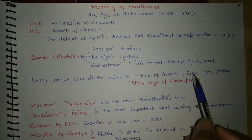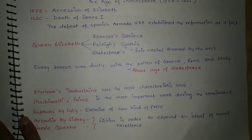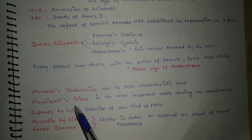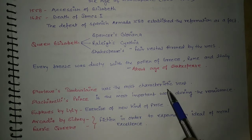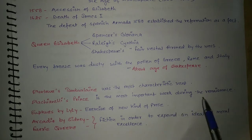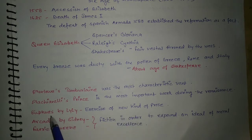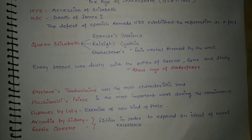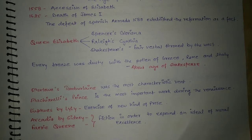The important things that happened in this period: Marlowe's Tamburlaine was the most characteristic event. Machiavelli's Prince is the most important work during the Renaissance. Euphues by Lyly exercised a new kind of prose, and the term 'euphuism' came into existence because of this work. Arcadia by Sydney and Fairy Queen used fiction in order to expound an ideal of moral excellence, because they were writing to bring virtues in people.